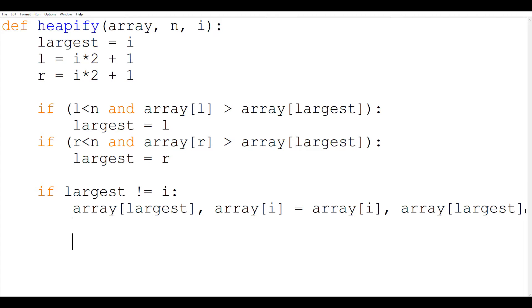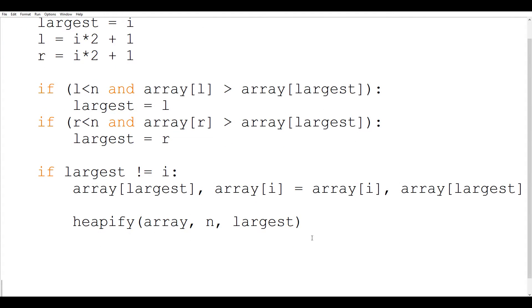And after swapping we are going to also call heapify again. So heapify the array, the length of the array will be n and this time instead of i we are going to pass the largest since we are going to heapify that child node which got swapped. So that is our heapify function and now let us proceed to write our heap sort function.